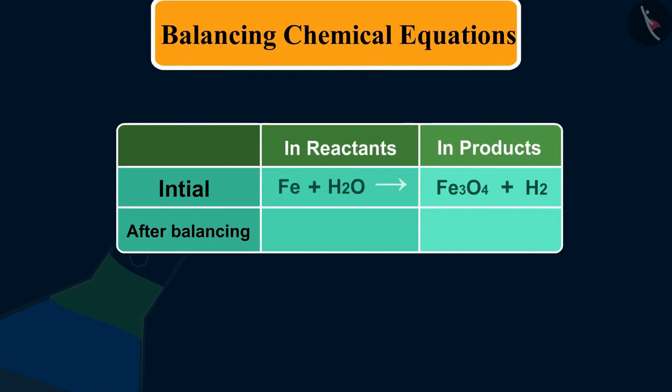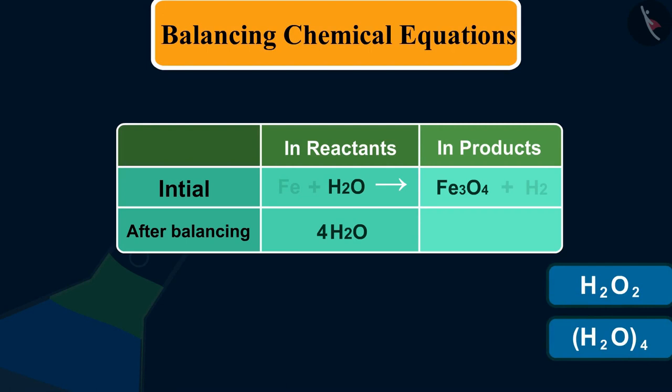First, we try to balance Fe3O4 and the element oxygen in it. To balance the oxygen atom, we can put coefficient 4 as 4H2O. But remember, we cannot write H2O2 or H2O4 like these.